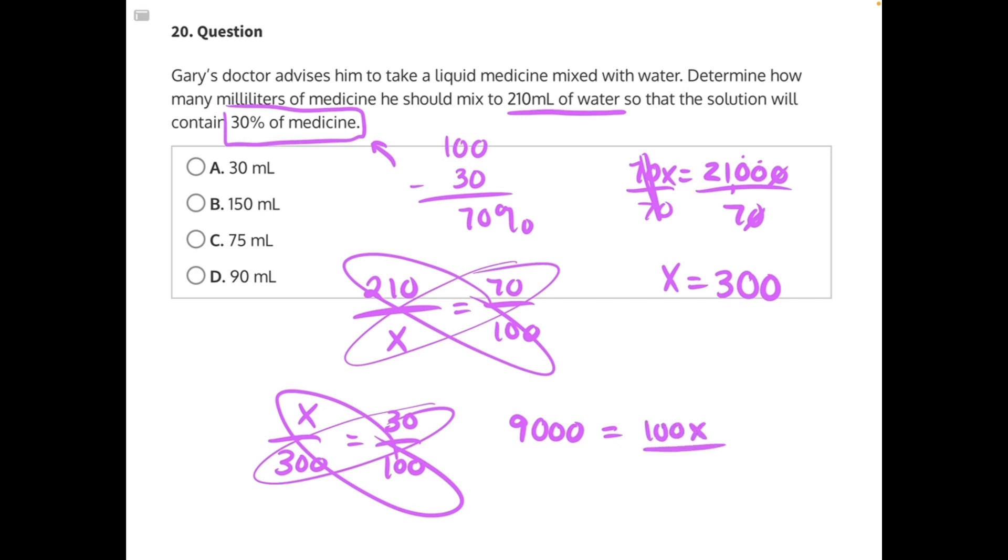100 is being multiplied to x, so we need to divide both sides by 100. These cancel, leaving us with x equals, cross out your zeros, 90 over 1, which is just the same thing as 90, making D our correct answer.